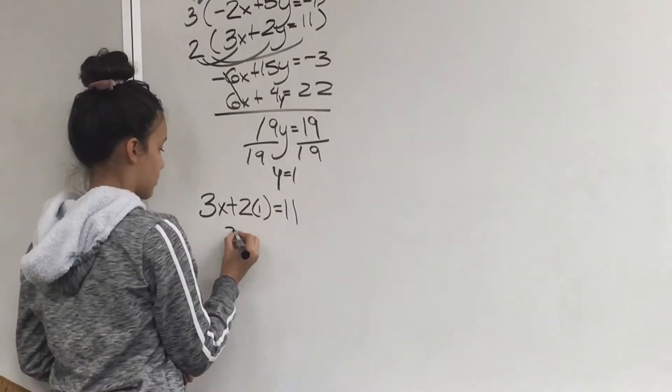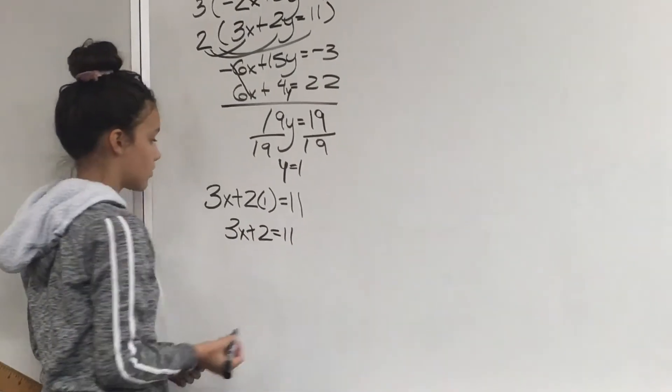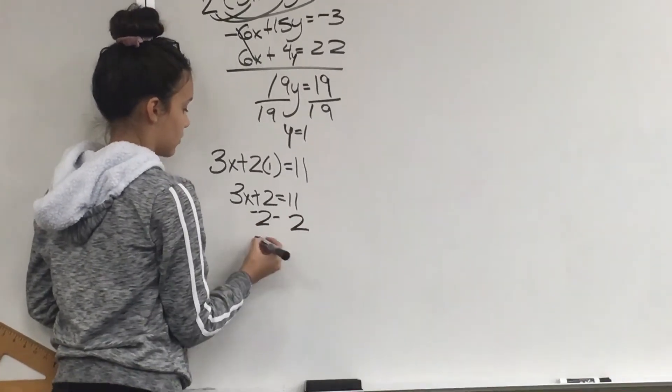Multiply 2 times 1, giving you 3x plus 2 equals 11. Next subtract 2 from both sides, leaving you with 3x equals 9.